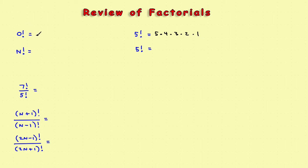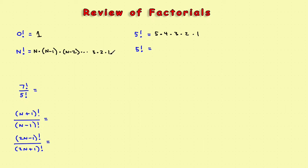A couple of special cases: zero factorial is defined to be one. For n factorial, you write it in descending order starting with n: n times (n minus 1) times (n minus 2), continuing down to 3 times 2 times 1. So n factorial starts with n and you subtract one each time.